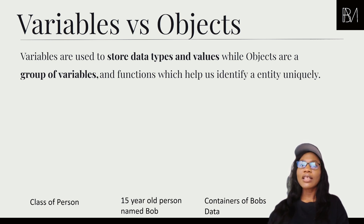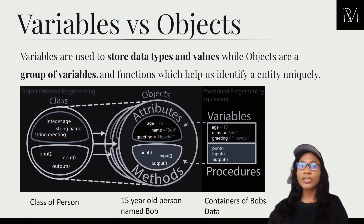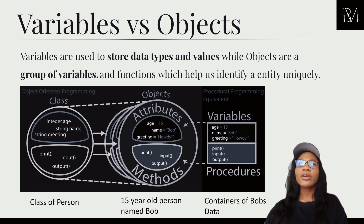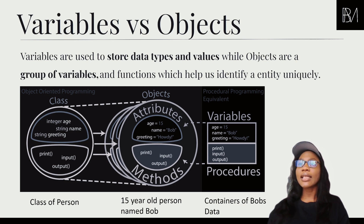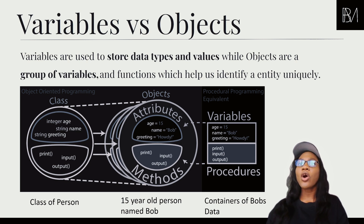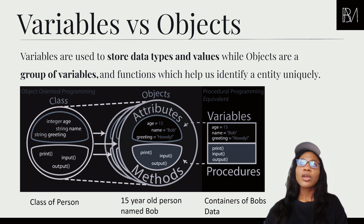Let's elaborate a bit further. If you have a class of Person — which is a blueprint for what a person can be — you have data types like integer and string. Every person can have the data of age and the data of name. The object is an instance of that class, so we're looking at a person named Bob who is age 15 and whose greeting is 'howdy'. Age is a container for 15, name is a container for Bob, and greeting is a container for howdy.